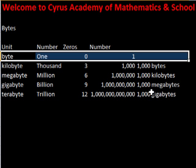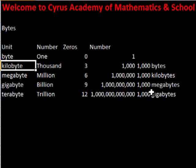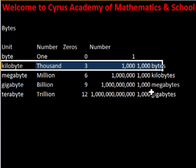Next is a kilobyte. What number is it? A thousand. How many zeros does it have? Three. And how many bytes are in there? A thousand.